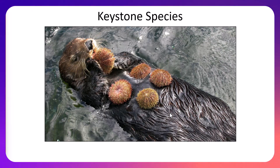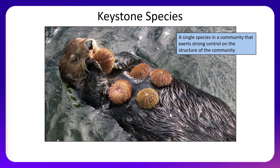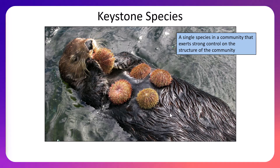The next kind of species interaction is the idea of a keystone species — a single species within a community that exerts much stronger control on the entire structure of the community it exists in. Remember, a community is all of the different organisms among all the different species in the same place at the same time. Keystone species are fundamental in impacting both biotic and abiotic factors in an ecosystem.